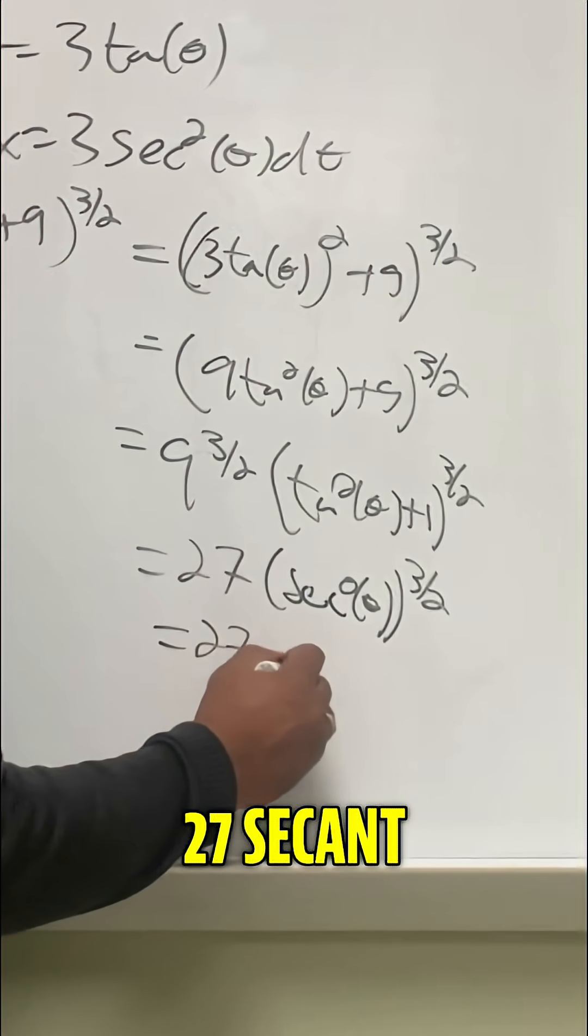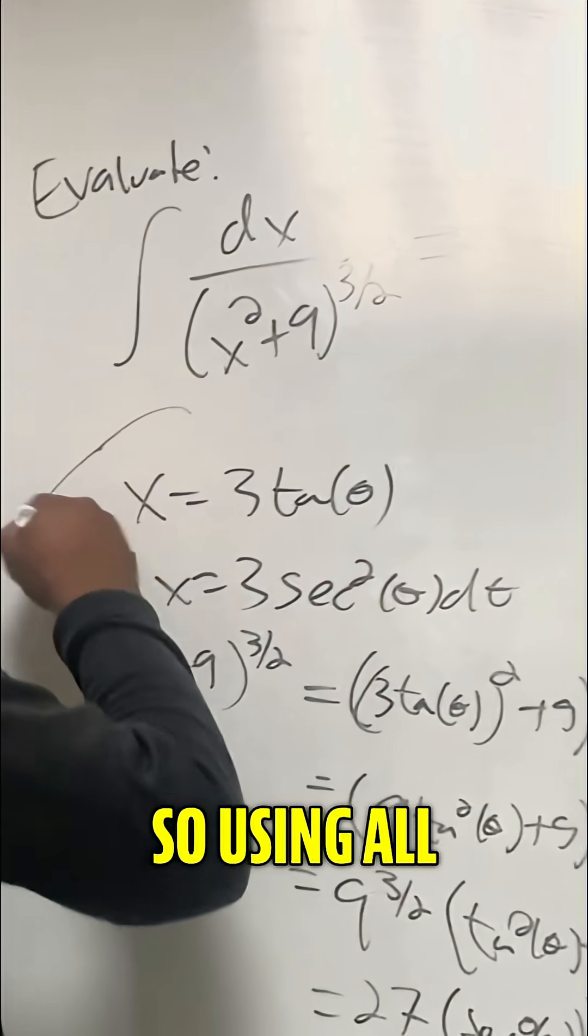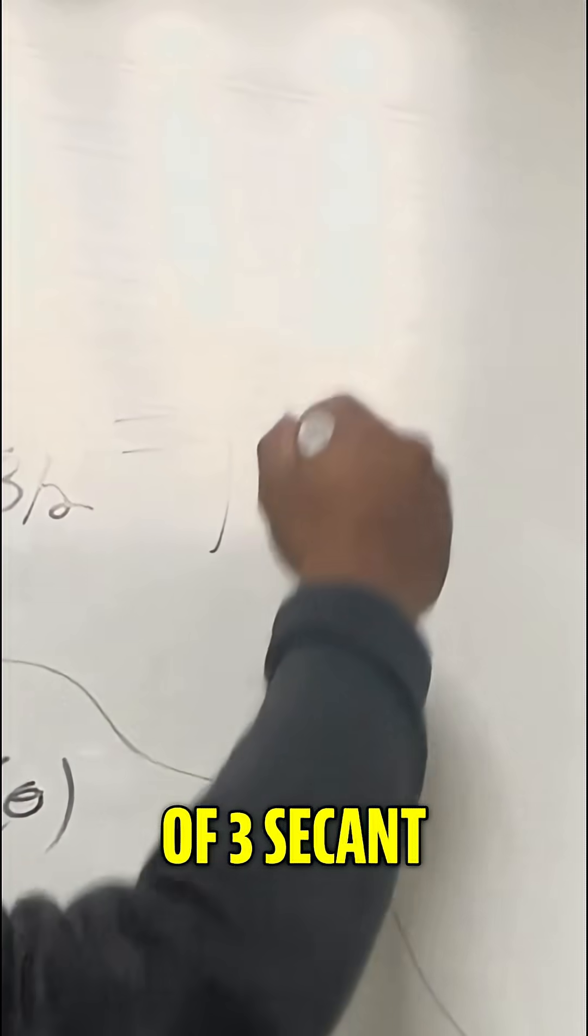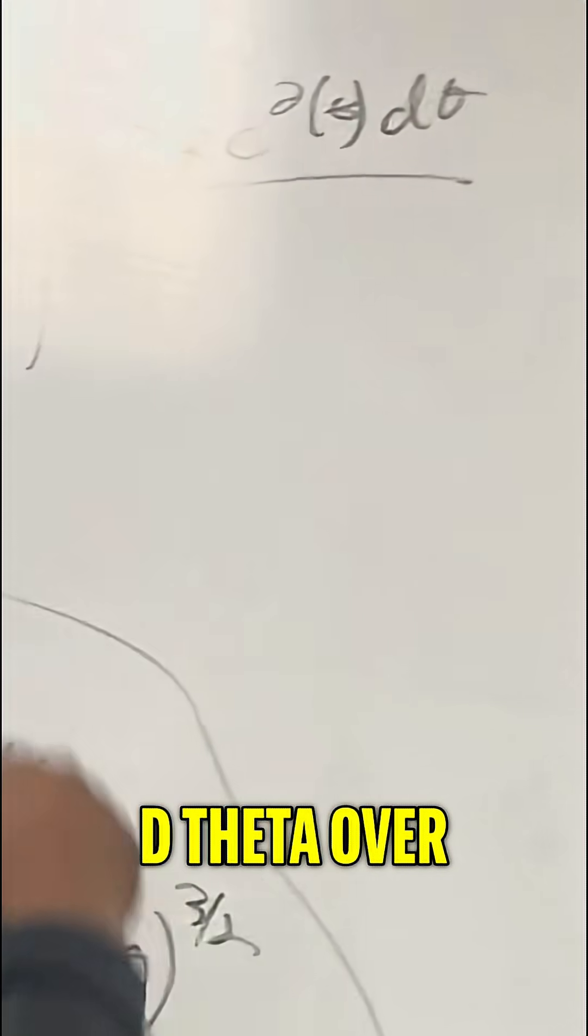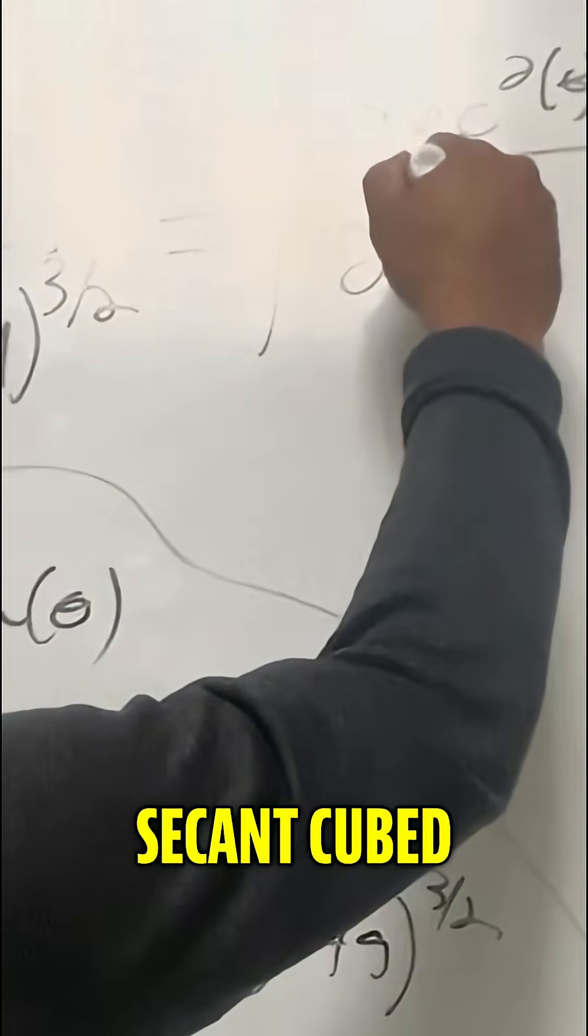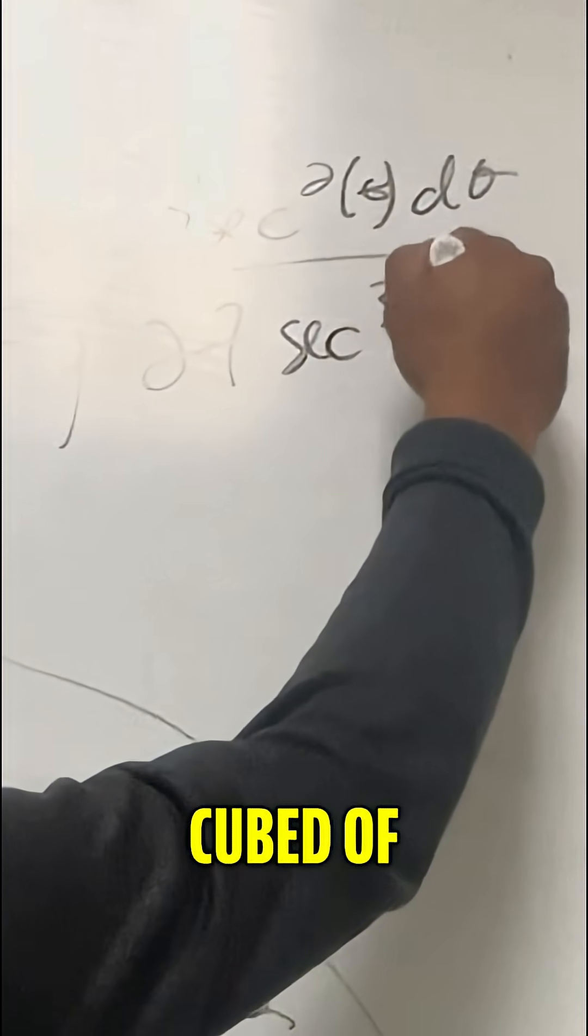And so we get 27 secant cubed of theta. So using all that, it becomes the integral of 3 secant squared of theta d theta over 27 secant cubed of theta.